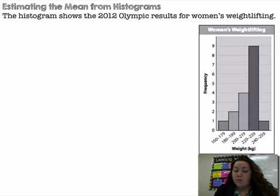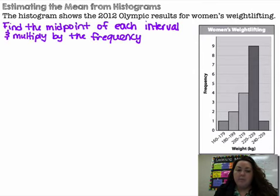So I have one person in that group. I have two people in the group 180 to 199. I have four people in the group 200 to 219. I have nine people in the group 220 to 239, and I have one person in the group 240 to 259. So I'm going to find the midpoint of each interval, and I'm going to multiply it by the frequency, how many I had in that interval.